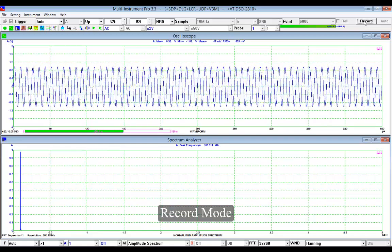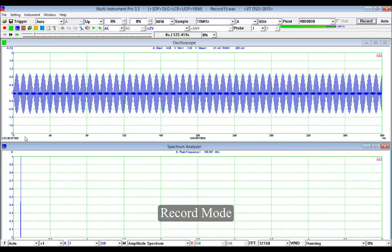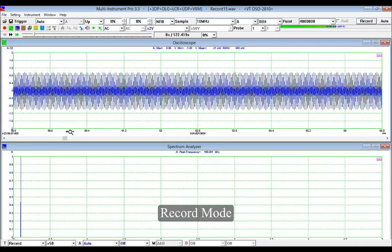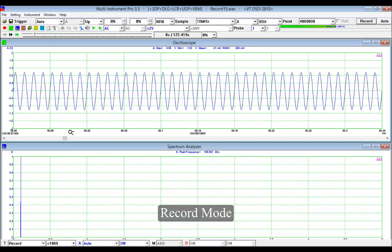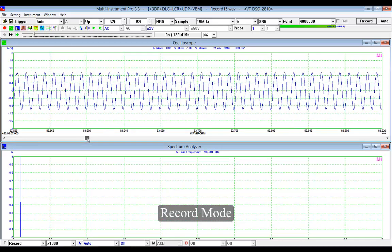We have recorded for about 120 seconds, which means that more than 1.2 gigabytes of data have been recorded. Imagine how expensive it would be for an oscilloscope with gigabytes memory depth. Now we can zoom in and check if the waveform we have recorded is continuous. As you can see, the waveform is perfectly continuous.